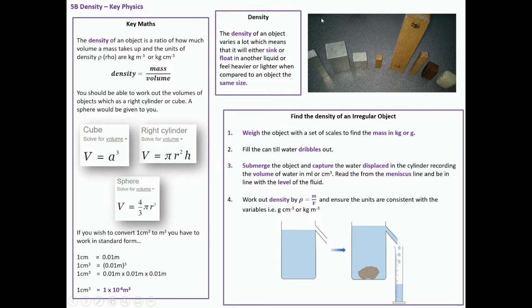Density of an object, which varies a lot, means that things will either sink or float in another liquid when they feel heavier or lighter, when compared to the same size object. So you should be able to work out density of different objects, metals or woods or plastics.